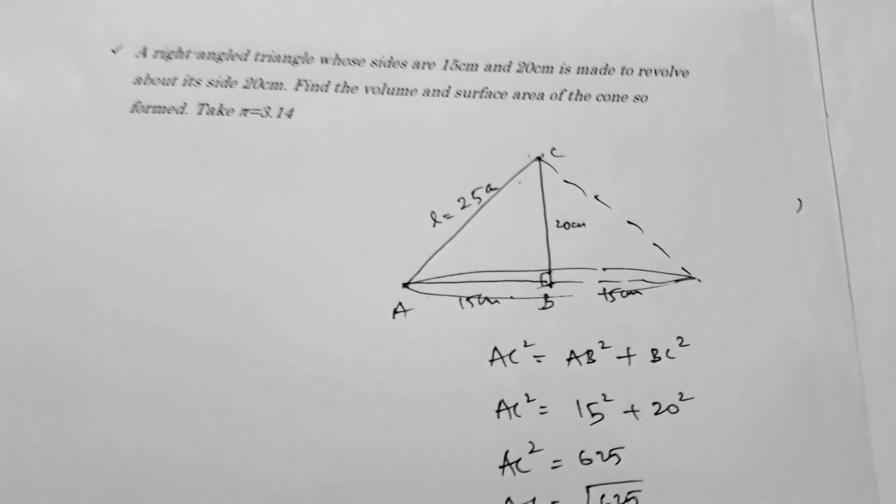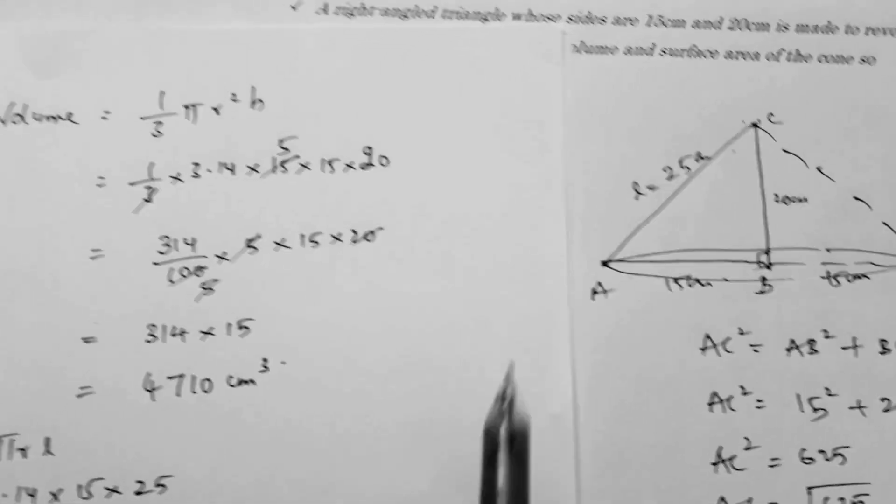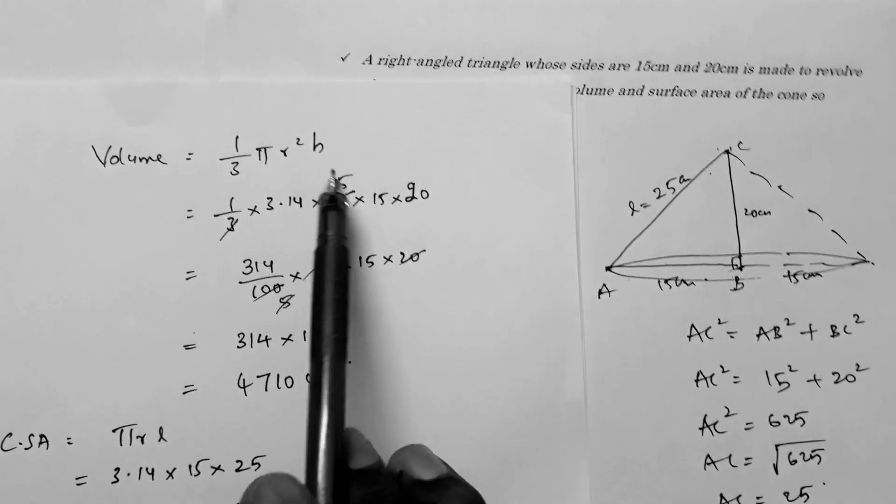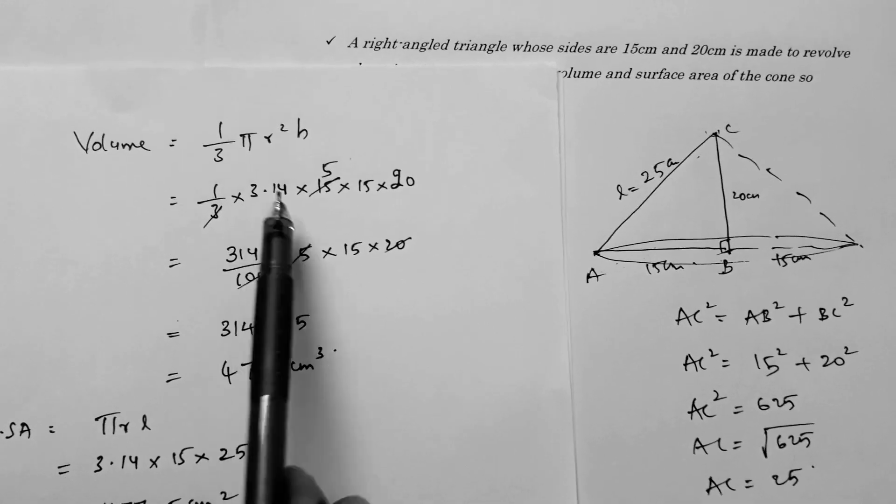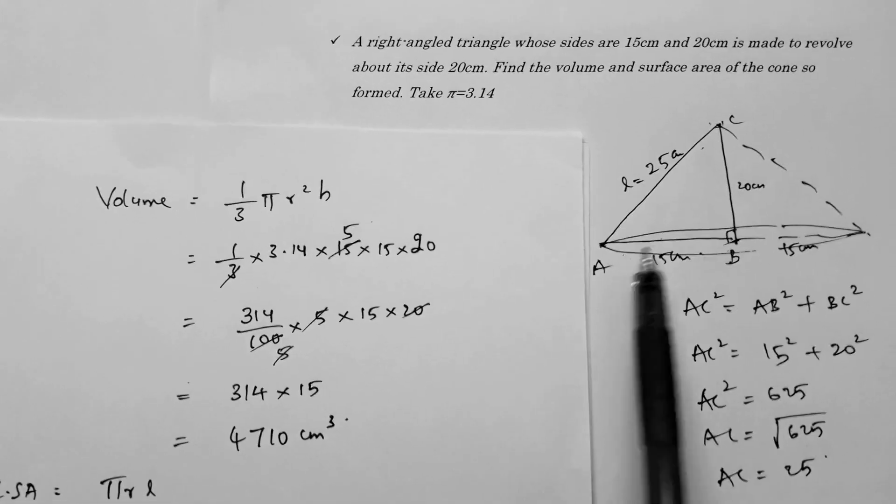Volume of a cone is 1/3 πr²h. Here volume is 1/3 × π × r² × h, so 1/3 times the given π value 3.14 times r, which is 15 squared, times height 20.